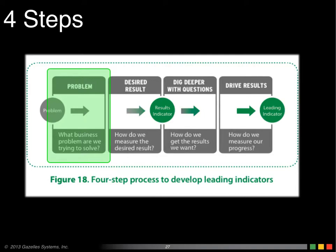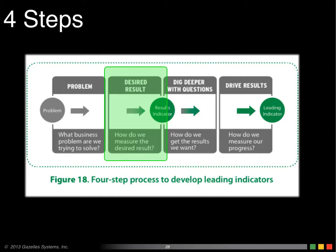Let's use an example of achieving a sales quota. The business problem here is: I want to achieve my sales quota. Then you want to know how you're going to measure that result. Let's say your sales quota is about a million dollars in sales. You need to have success criteria for a result — red, yellow, green.